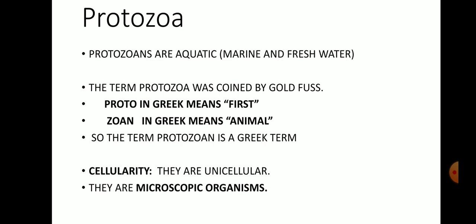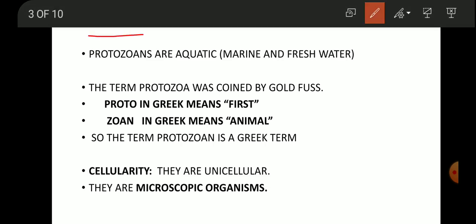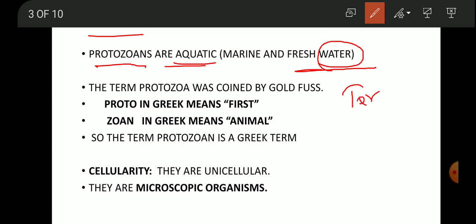The protozoans are aquatic animals. Aquatic means organisms which prefer to live in water and which cannot survive on land. Those organisms are called aquatic animals. Animals which live on land are called terrestrial.